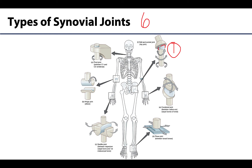The two main ball and socket joints are the glenohumeral, or the shoulder joint, as well as the hip joint.